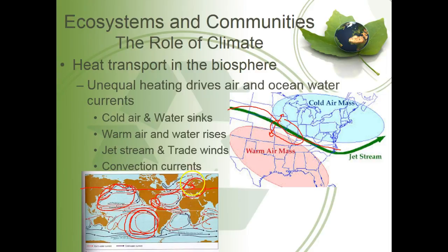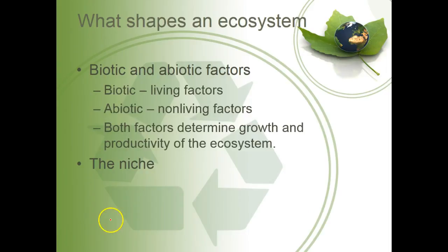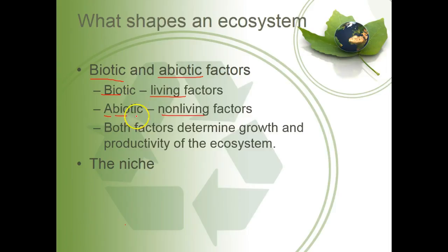Let's get into what specifically shapes an ecosystem. Biotic and abiotic factors are factors that are living or nonliving, respectively. Biotic — 'bio' means life — so these are the living factors. Abiotic — 'a' means non or without — so these are the nonliving factors. Both factors determine the growth and productivity of an ecosystem. Water is an abiotic factor that is vital to life. Oxygen is vital to life but it's not living — those are nonliving factors that are vital to growth, life, and productivity of an ecosystem.